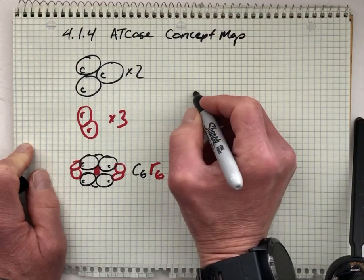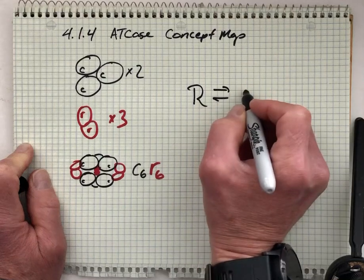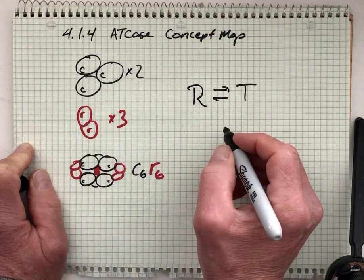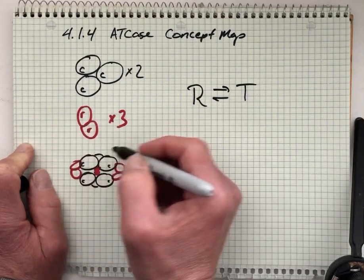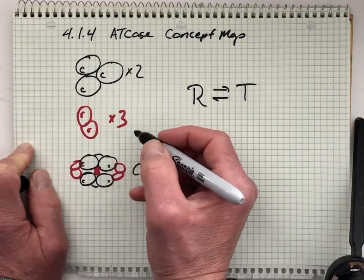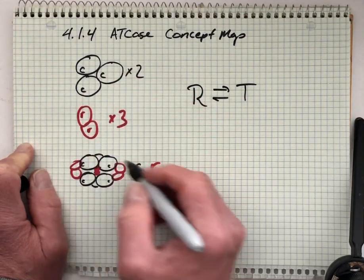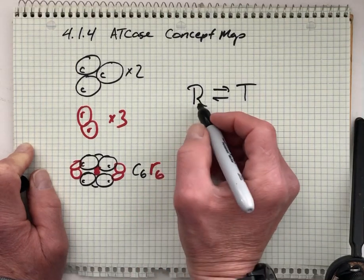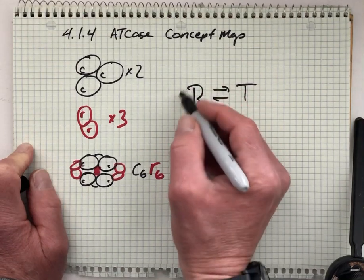This time I'm going to draw the RT equilibrium in this direction. We know that the regulatory subunits are what make the enzyme special because if we isolate just the catalytic trimer so that we don't have a holoenzyme, then we're just talking about the R form of the enzyme.